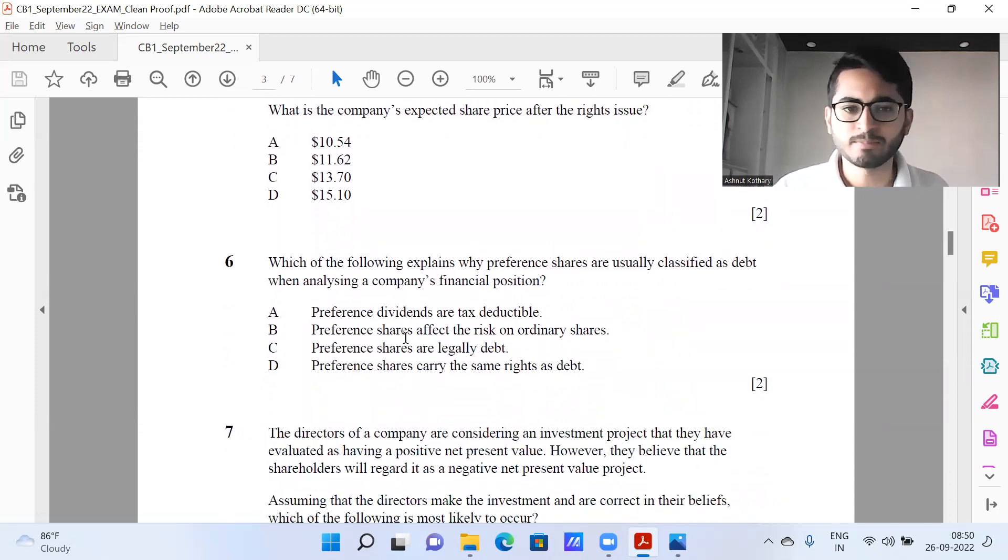Question number six, again, I'll say slightly tricky one. Which of the following explains why preference shares are usually classified as debt when analyzing a company's financial position. Preference dividends are tax deductible. Preference shares affect the risk on ordinary shares. So B is true, because you cannot pay dividends to the ordinary shareholders before you pay to the preference shareholders and so on. Preference shares are legally debt. Again, when they say legally, it might be a bit confusing. Obviously the material is as per UK itself, but for other students outside UK who are not aware of the complete UK tax regulations, it might become a bit tricky. But preferences carry the same right as debt. So clearly D looks wrong. I mean, preferences is equity in that sense. They do not carry the same right as debt. At least the debt holders will be ranked higher compared to preference shareholders.